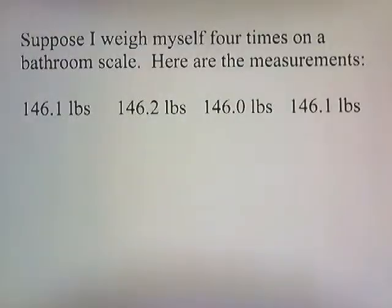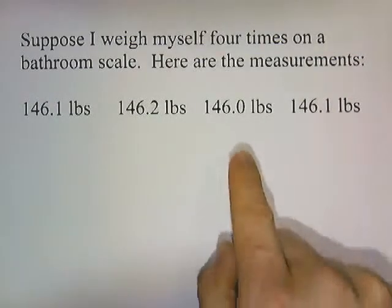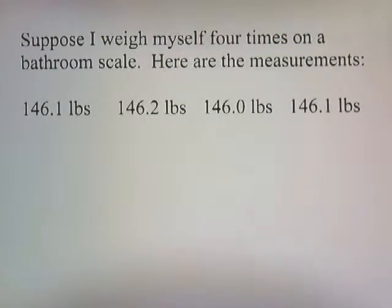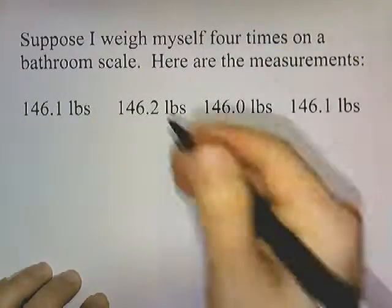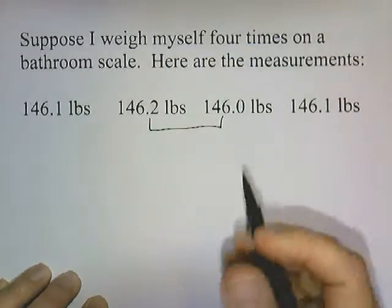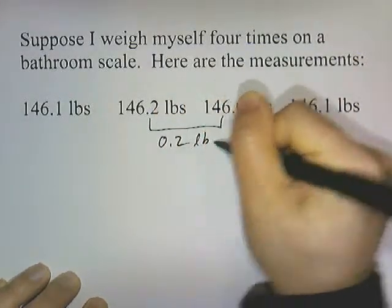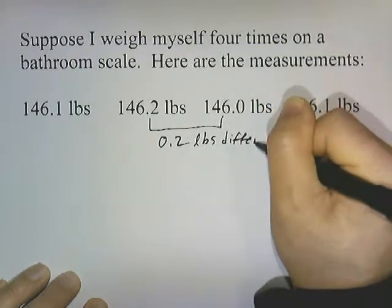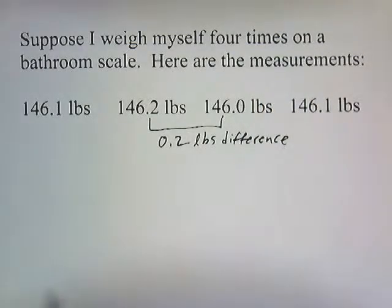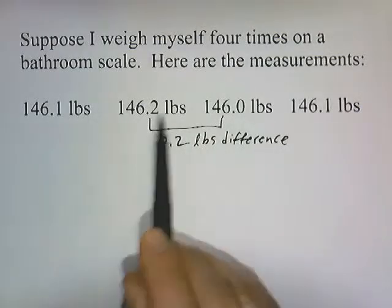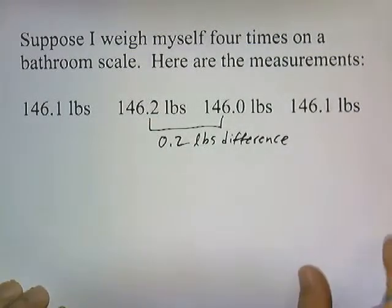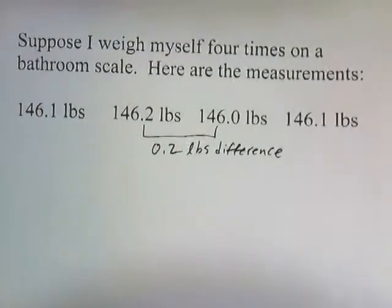Let's have another example. Suppose I weigh myself four times on a bathroom scale. The first time I step on the scale I weigh 146.1 pounds. The second time I weigh 146.2 pounds. The third time 146 pounds, and the fourth time 146.1 pounds. These measurements seem to be pretty close together. In fact, the greatest difference between two of the measurements is 0.2 pounds. I can say that these measurements are precise. Each time we take a measurement, we get something close to the same value.